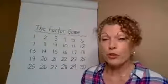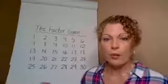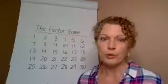And then my opponent, player two, would get all of the remaining factors of 22. So they would get one and two and 11, and they would get 14 points total, and I would get 22.